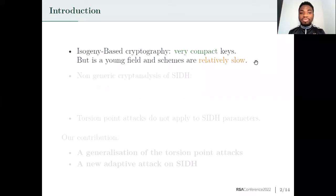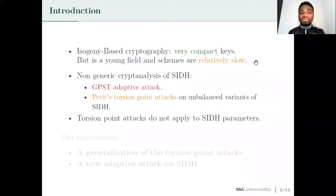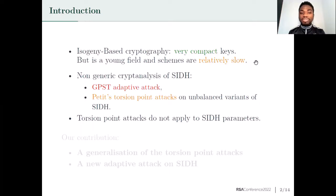Isogeny-based cryptography is a branch of post-quantum cryptography that offers schemes with very compact keys, but it is a relatively young field and the schemes based on isogenies are relatively slow compared to other post-quantum candidates. The SIDH protocol is one of the most known isogeny-based protocols, and the non-generic cryptanalysis of SIDH is made up of the GPST adaptive attack and the Petit's torsion points attack on unbalanced variants of SIDH. The Petit's torsion points attack does not apply on the original SIDH parameters as proposed in SIDH or in SIC. They apply only on unbalanced variants of SIDH.